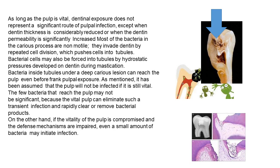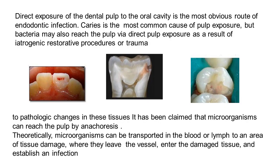If the vitality of the pulp is compromised, the defense mechanisms are impaired. With a non-vital pulp there is no blood supply, and bacteria can invade. Direct exposure of the dental pulp to the oral cavity is the most obvious route for endodontic infection. Bacteria may also reach the pulp via direct exposure during operative procedures, which is why isolation in operative dentistry is important.